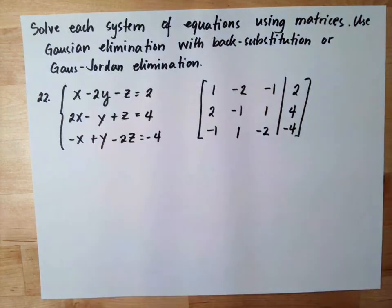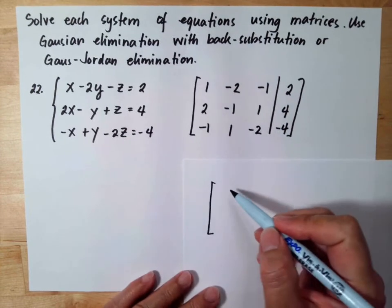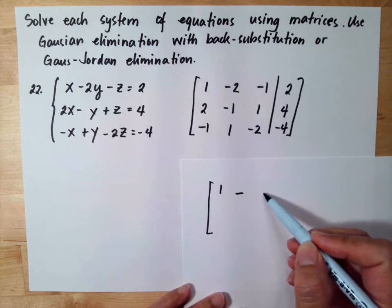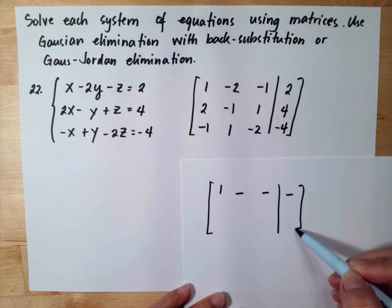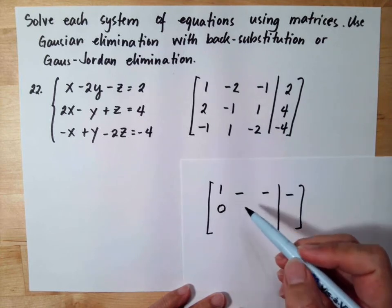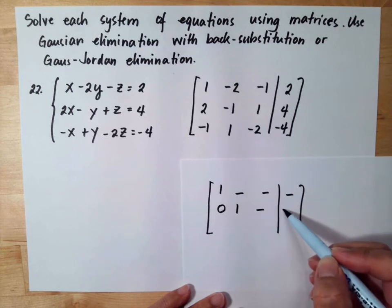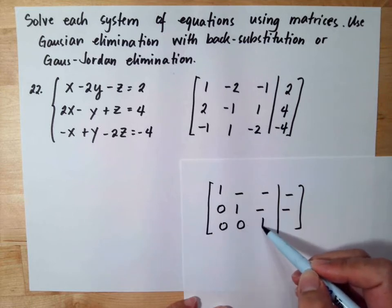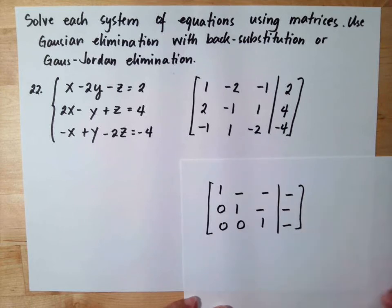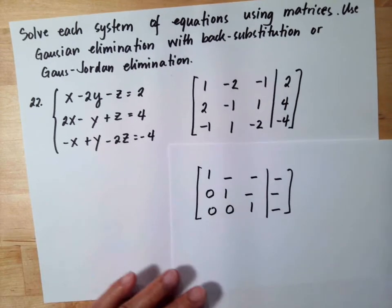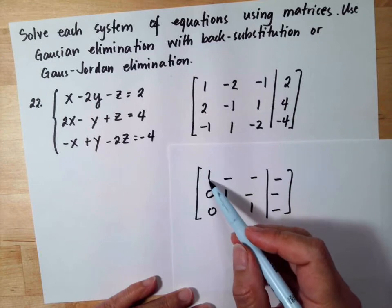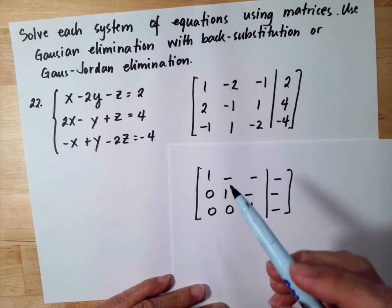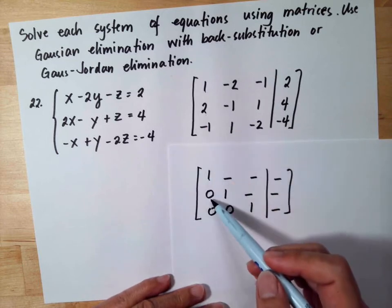Our goal is to make one coefficient 1 in the first column, then make the entries below it 0, then make the next diagonal entry 1, and so on down to the last pivot being 1. The first coefficient is already 1, so we don't need to do anything for that. But the 2 below it should turn to be 0.